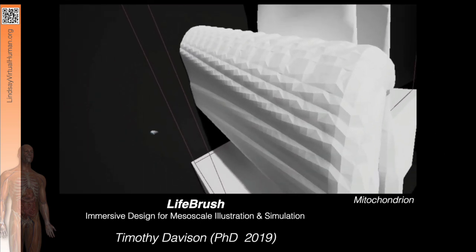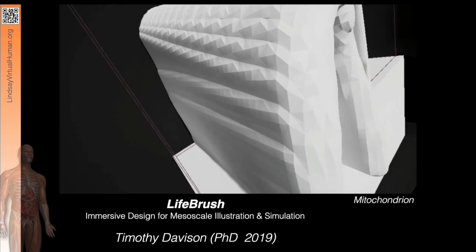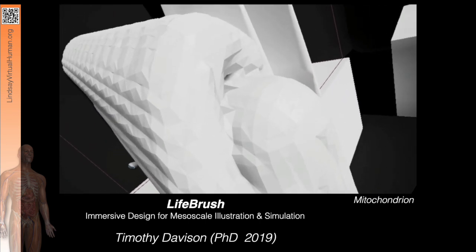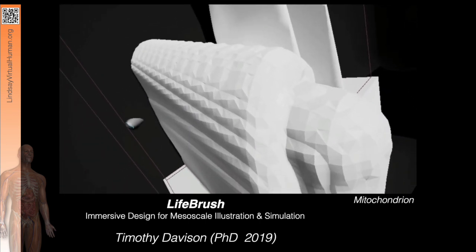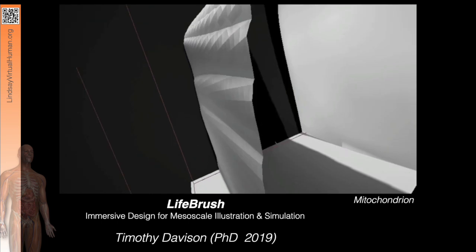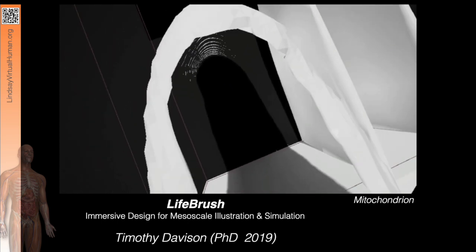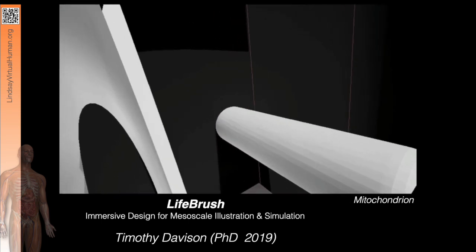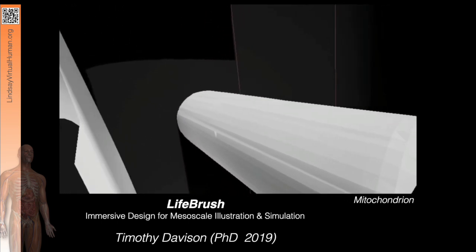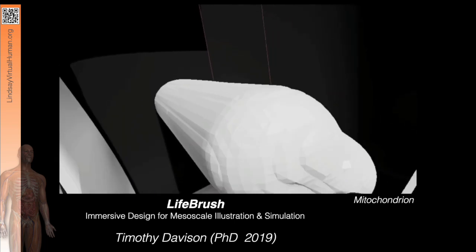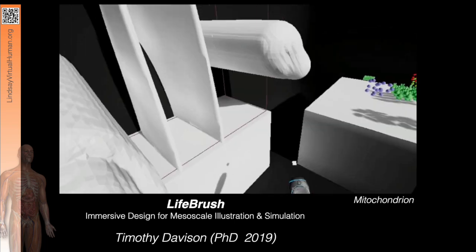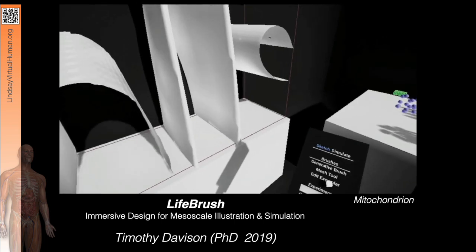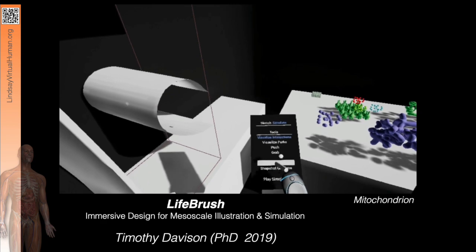The geometry tool uses implicit surface modeling, allowing the user to paint the environment like it's virtual clay. Here we're adding cristae regions to the mitochondria, which greatly increases internal surface area and hence the rate of ATP synthesis.